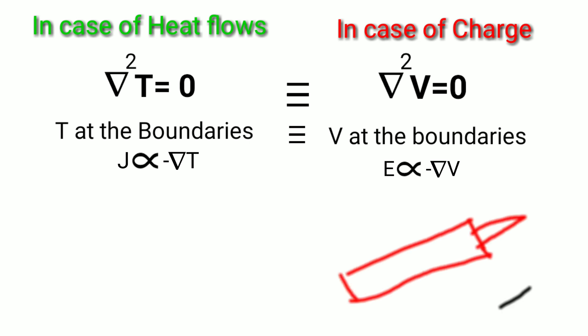In case of lightning conductor, the rod has a sharp edge because at the sharp edge, the electric field becomes very large. So the gradient of V will be very large at the sharp edge.